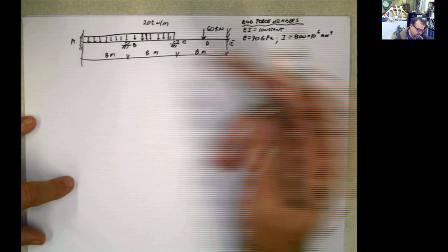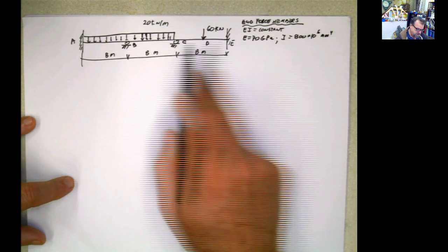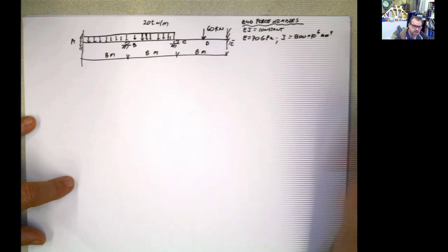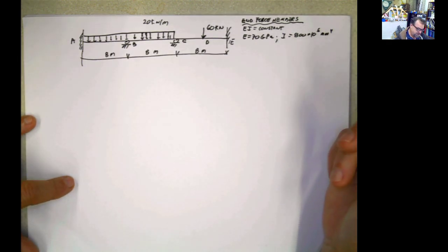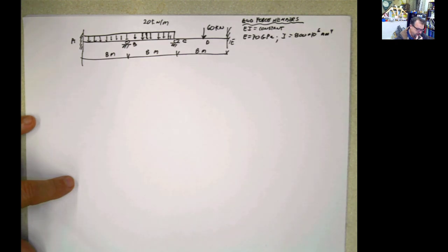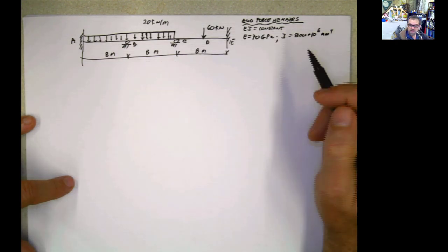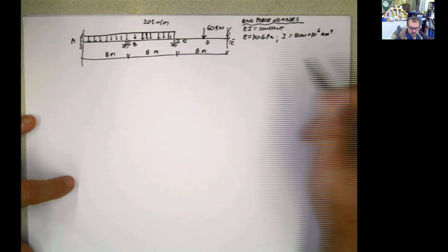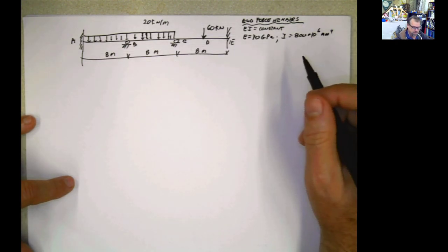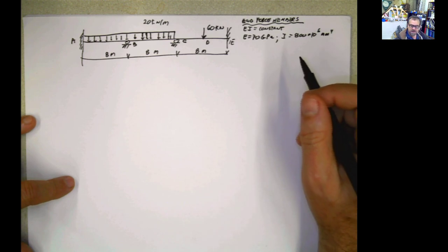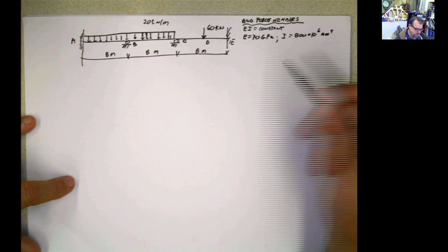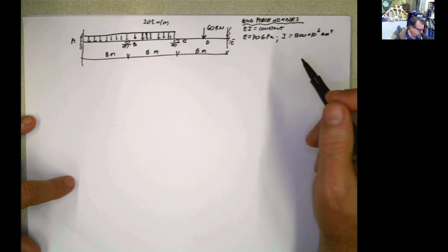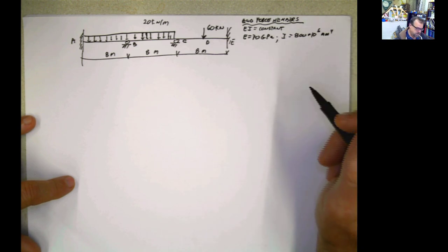So how many degrees of indeterminacy? 3, 6, 7, 8. 8 minus 3 is 5, so it's fifth degree indeterminate. The method of forces will take a lot of time. Slope deflection will take a couple of pages. So let's see what happens with moment distribution.